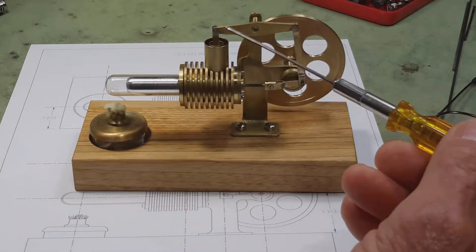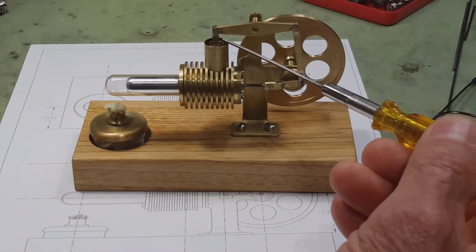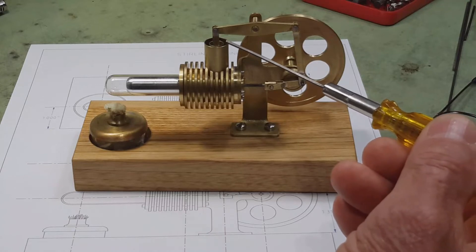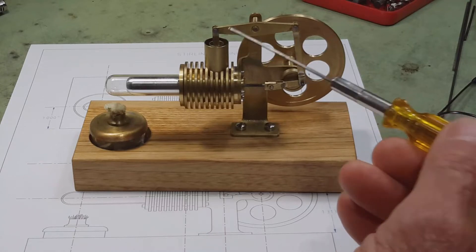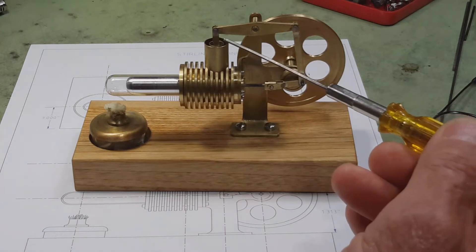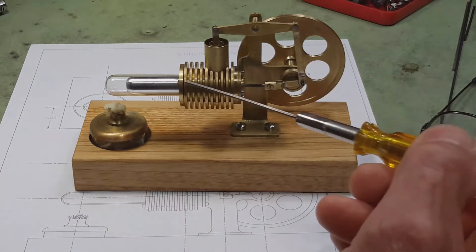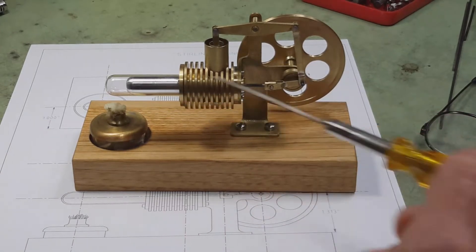The power piston is a very small quarter inch piston and it has a three-eighths inch stroke, the same as the stroke of the displacer.